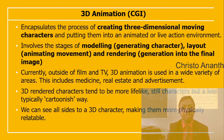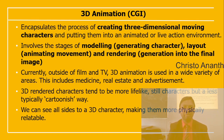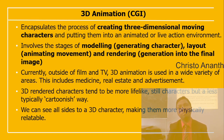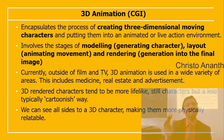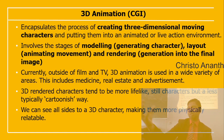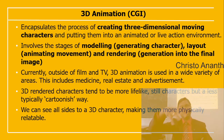3D animation and CGI encapsulate the process of creating three-dimensional movie characters and placing them in animated or live-action environments. The stages include modeling (generating the character), layout, animating the movement, and rendering to generate the final image. Outside of film and TV, 3D animation is used in medicine, real estate for virtual building visualization, and advertisement. 3D rendered characters are like cartoon characters where you can see all sides, making them more physically relatable. Even platforms like Facebook allow 3D pictures that you can rotate and view.